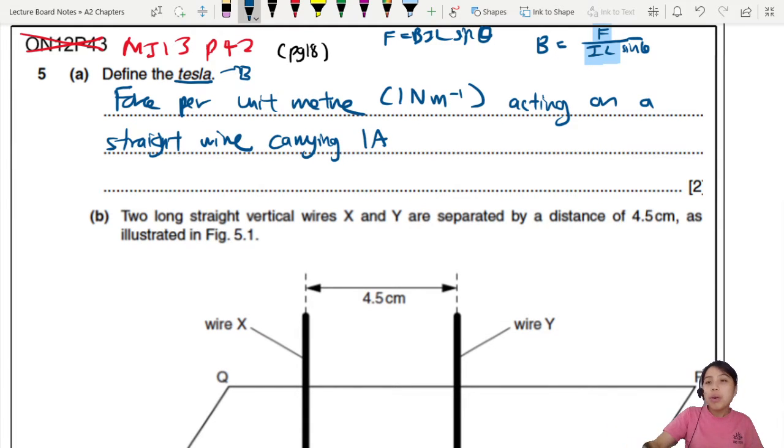Force per unit meter, also known as 1 newton per meter, acting on what? Acting on a straight wire. What about the wire? What current is it carrying? We talk about force, we talk about length. Let's talk about I. Carrying 1 ampere of current.